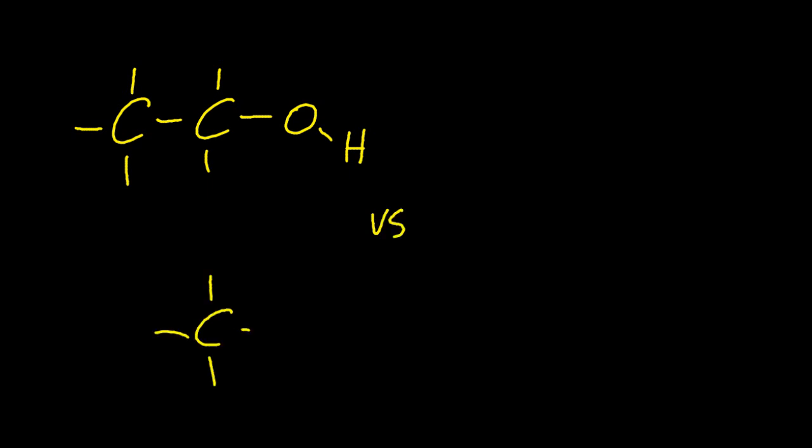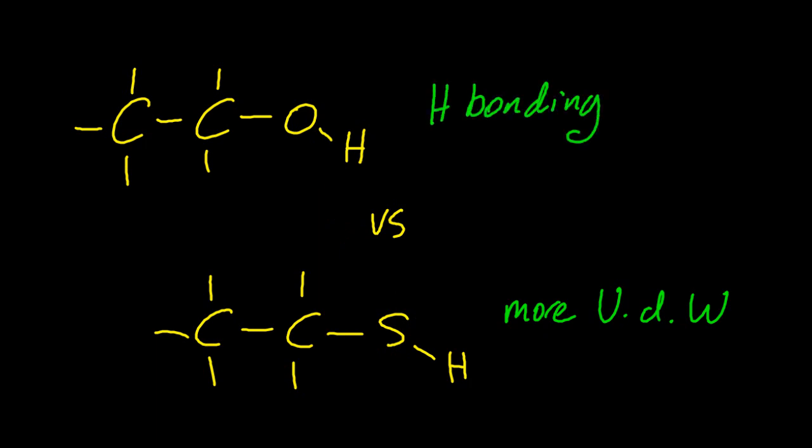And once again, ethanol. And that's ethanthiol. Now that's got more van der Waals bonding, because sulfur has more electrons than oxygen. But hydrogen bonding, that's a special sort of dipole. It's special because it's strong. So the boiling points are, or in Kelvin this time, you can see. Yeah, the alcohol has a higher boiling point. Even though the other one has more van der Waals, van der Waals is weaker.